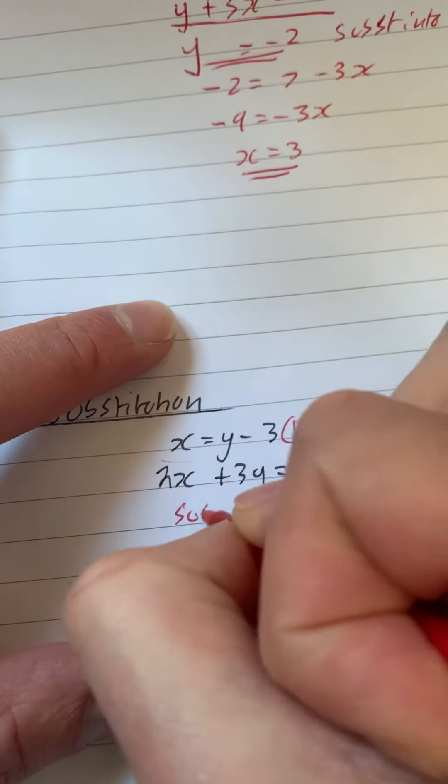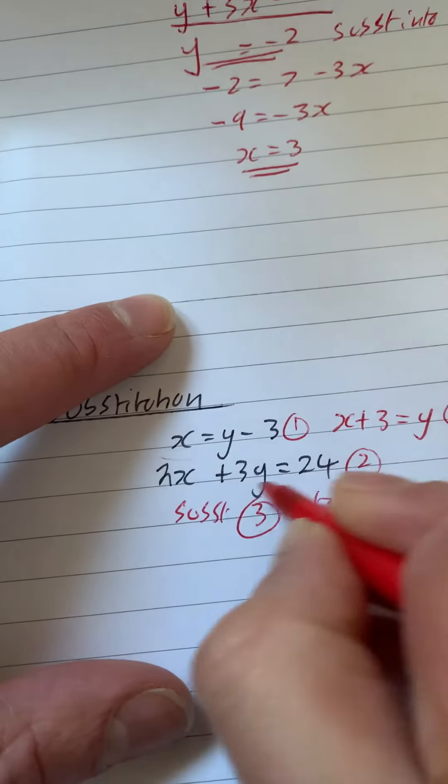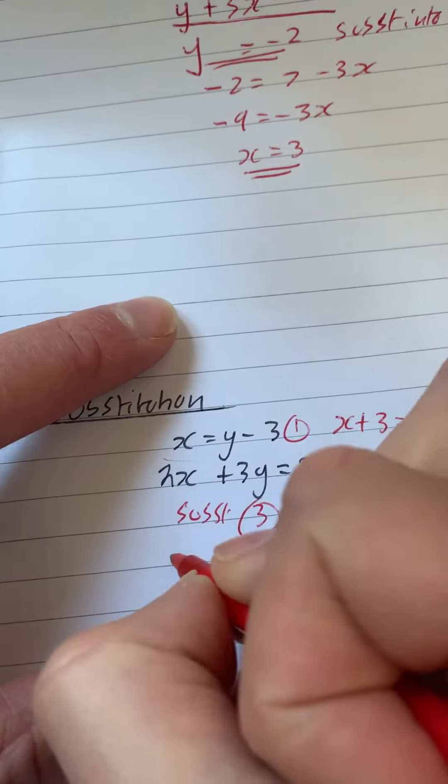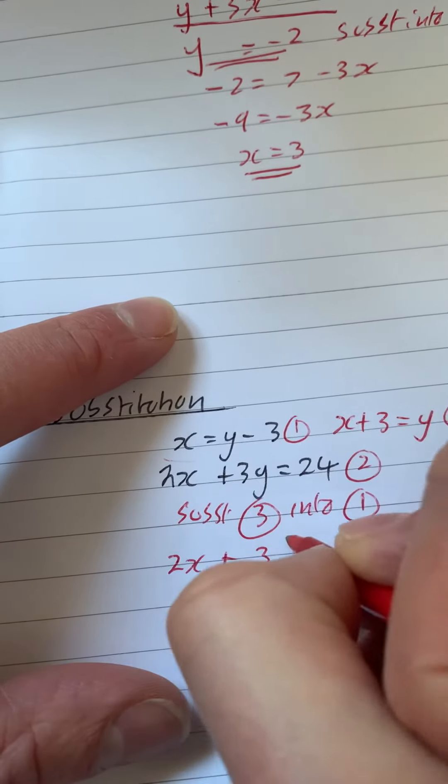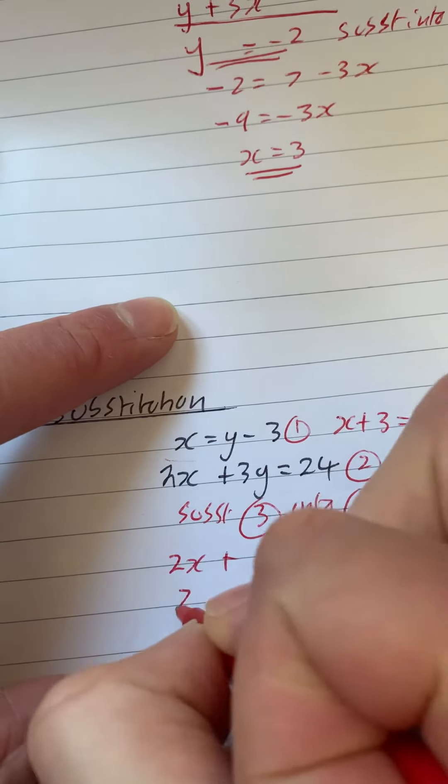I'm going to substitute 3 into 1. So where y comes up, I'm going to put x plus 3. So I've got 2x plus 3 bracket x plus 3 is equal to 24. Expand the bracket.